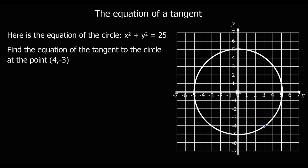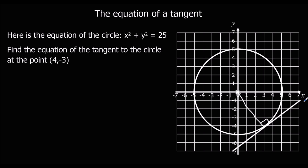So (4, -3) is here, and a tangent is a line that just touches the circle — something like that. We're not going to estimate the gradient; we're going to work out the actual equation of the tangent. What we need to know is that the radius meets the tangent at 90 degrees.